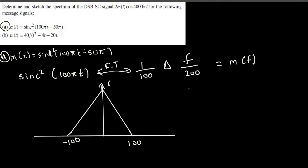This graph represents M(f) in the frequency domain. The height — that is, the amplitude — is 1/100. That is our diagram for M(f), and now we can go ahead and apply this to the DSB-SC signal 2m(t)cos(4000πt).